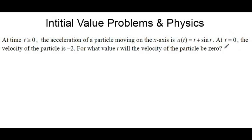Namely, that at time t = 0, the velocity is -2. Now, that gives us a very specific antiderivative, and then we can use that function and set that equal to zero.